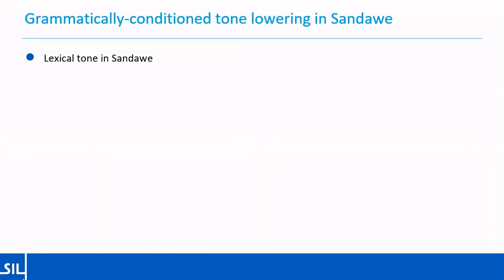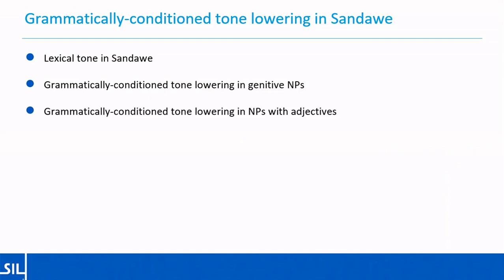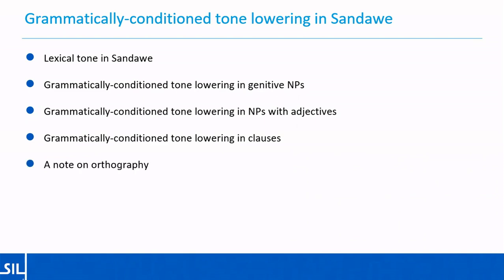I'm going to start by briefly describing lexical tone in Sandawe and how that's been analysed, and then move on to talking about Grammatically Conditioned Tone Lowering. I'll describe that by illustrating it with some genitive noun phrases first, then look at noun phrases with adjectives and how the same process is exhibited there, and then look at the same process in clauses of different types and how it interacts with conjunctions, clause types, and focus. I'll end with a note about the orthography implications of the tone lowering process.